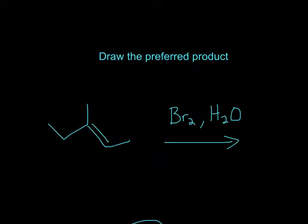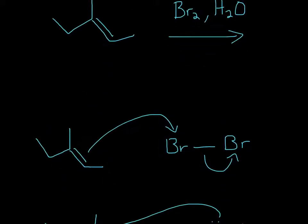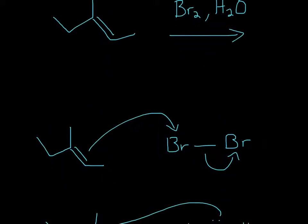In this problem, just draw the preferred product and then try it first, and then I'll explain. So the first thing is that this alkene will come and attack this bromine.